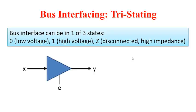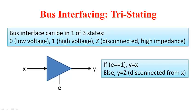Here is how we represent it diagrammatically. Here is the device and this is the bus or we could have the other way around where here is the bus and this is the device. In either case, we have this logic where we have an enable line represented as E. If E is 1, Y takes on the value of X. Otherwise, Y is disconnected from X.